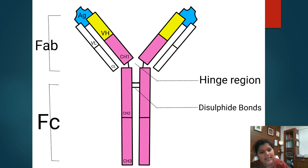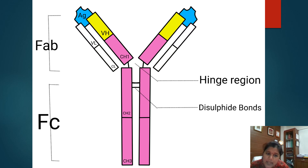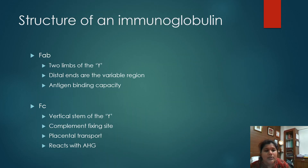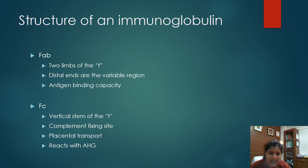We can see a CH region — that is the constant region. Wherever we see 'V' it indicates the variable region. The central part of the Y is the heavy chain and the light chain surrounds it. Both the heavy chain and light chain have a distal variable segment and a proximal constant segment. This variable region changes accordingly to bind to the antigen. The FAB — the two limbs of the Y — is the distal end and has the antigen binding capacity.